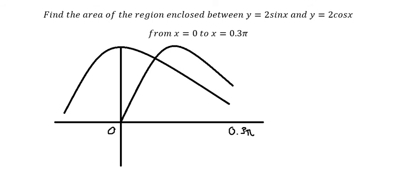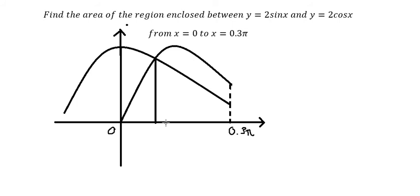So I just illustrated about the function. We know that the intersection between two sine x and two cosine x should be about π over 4.